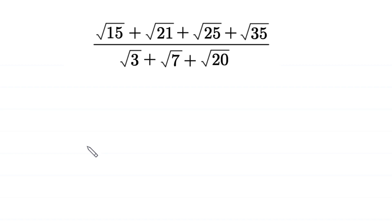Hello, welcome to how to solve this very nice square root math simplification problem: square root of 15 plus square root of 21 plus square root of 25 plus square root of 35, divided by square root of 3 plus square root of 7 plus square root of 20.